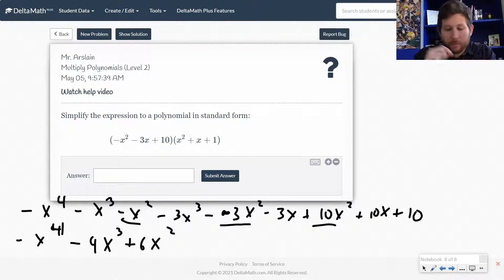so plus 6x squared. And then let's look at our x terms. So I've got negative 3x plus 10x, so that would be plus 7x, and then plus 10.